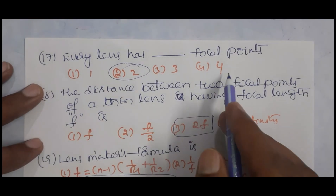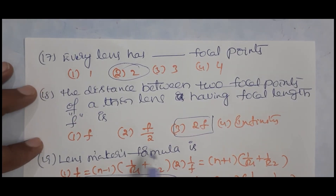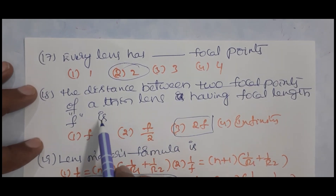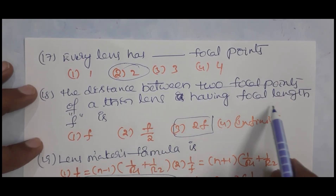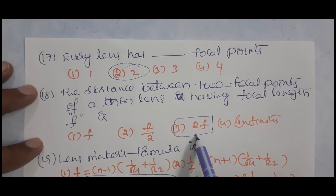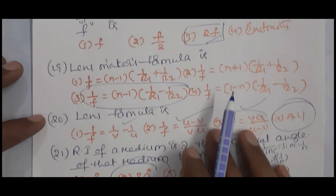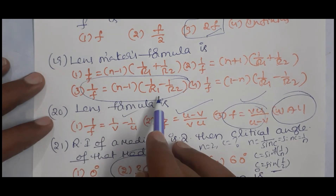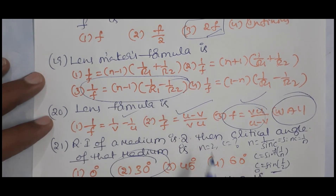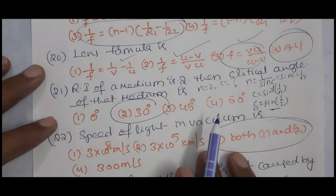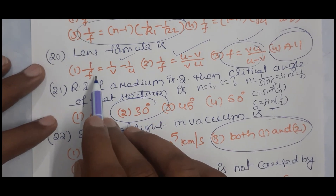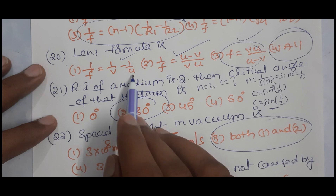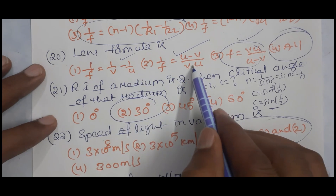Every lens has two focal points. The distance between two focal points of a thin lens with focal length f is 2f. The lens maker's formula is 1/f = (n − 1)(1/R1 − 1/R2). The lens formula is 1/f = 1/v − 1/u.